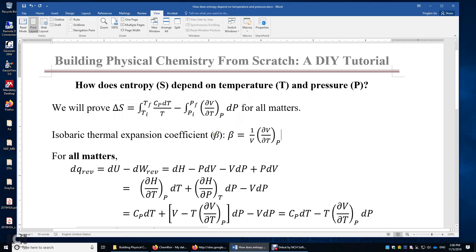First, we define beta. Beta is the isobaric thermal expansion coefficient. Beta equals 1 over V times delta V over delta T.